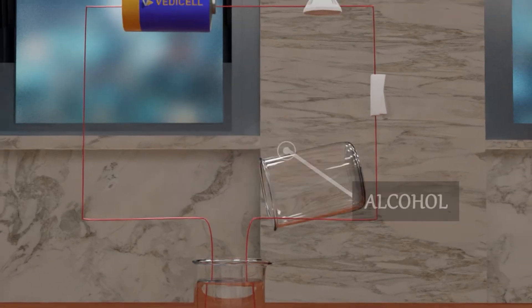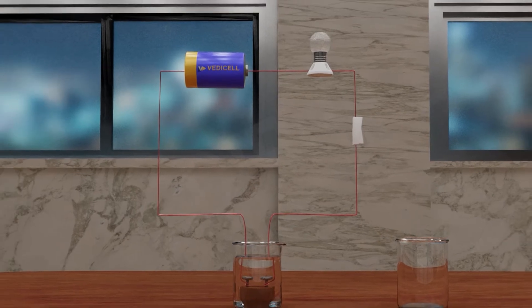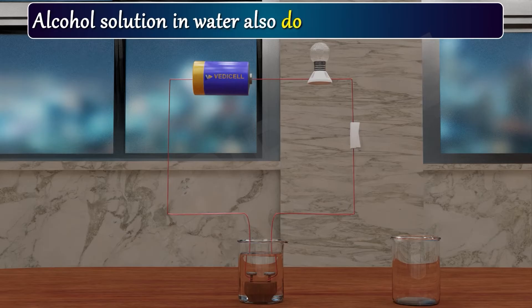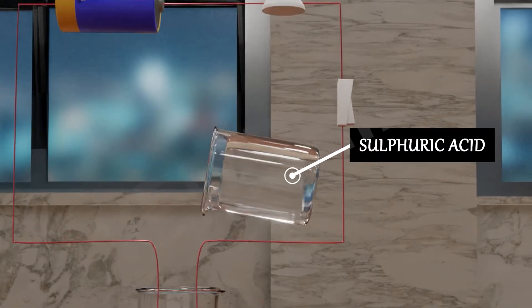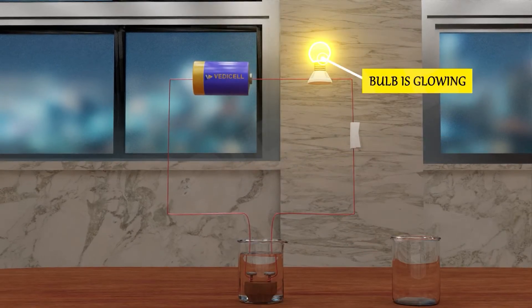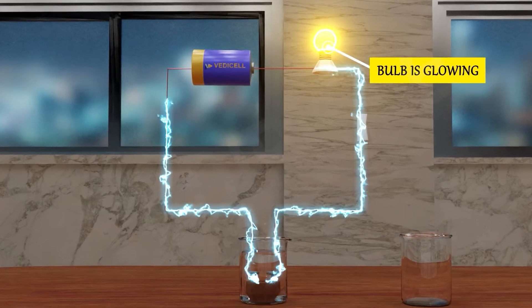What about alcohol solution? Again, bulb is not glowing. That means alcohol solution in water also doesn't conduct electricity. What about sulfuric acid? The bulb is glowing just like HCl solution. That means acid solutions in water conduct electricity.